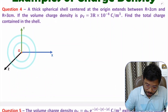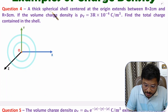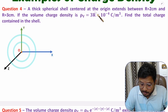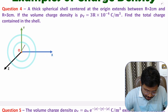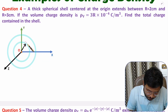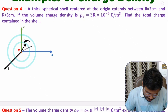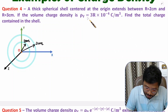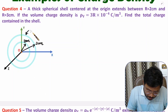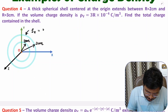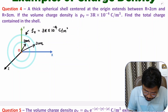In question four, a thick spherical shell centered at the origin extends between a radius of two centimeters and three centimeters. So we have a thick spherical shell extended between radius of two centimeters and three centimeters. The volume charge density ρv is given as 3r × 10⁻⁴ coulomb per meter cube inside this shell.